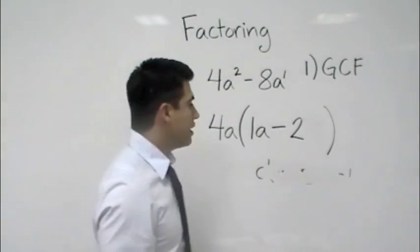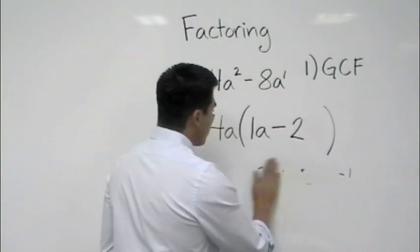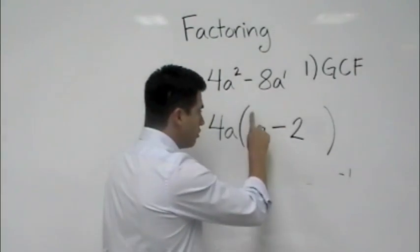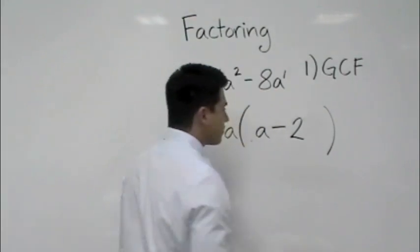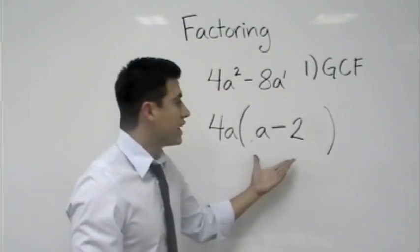Now what you can see is that 4a(a - 2), because we'll erase that 1 there, will be the factored answer.